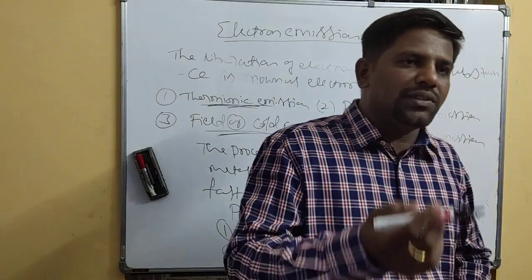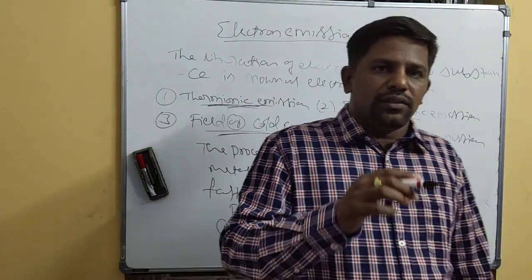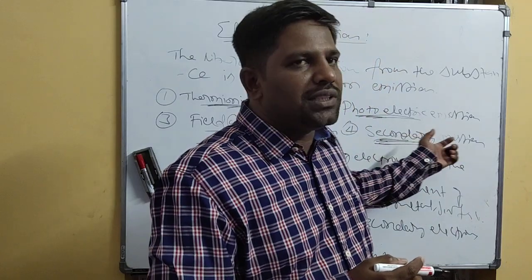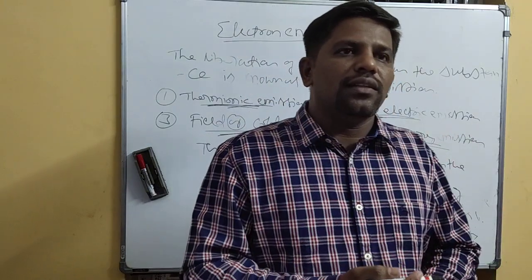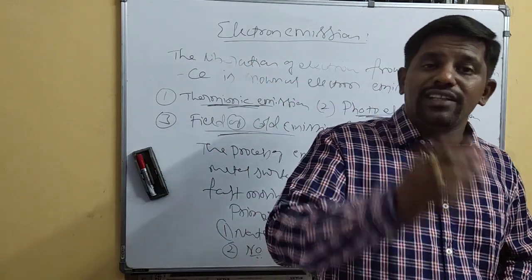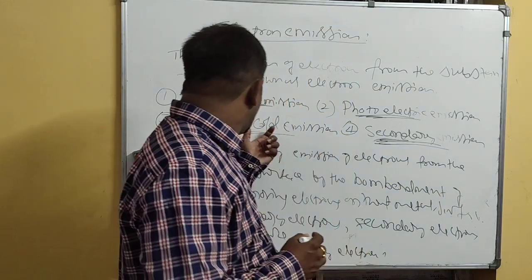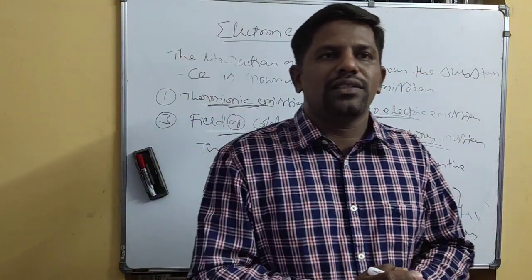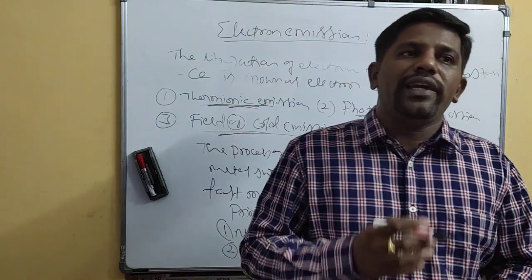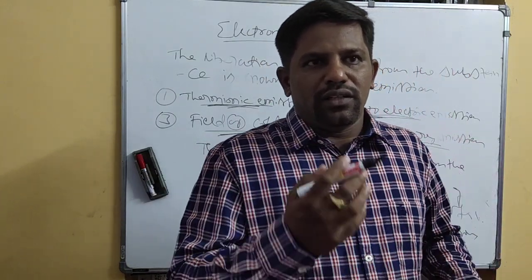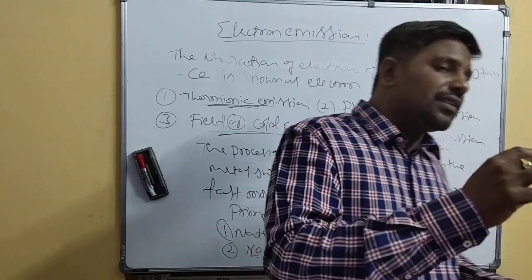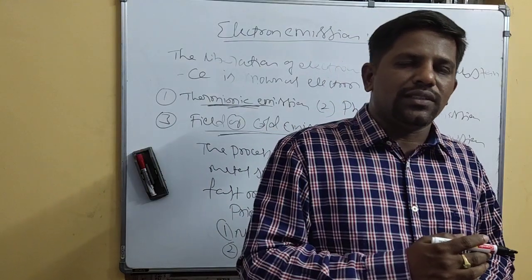In Photoelectric Emission, electrons are emitted from a metal surface by incidence of light of suitable frequency; those electrons are called Photoelectrons, and their number depends on the nature of the substance and the intensity of the incident light. In Field or Cold Emission, electrons are obtained by applying a strong electric field of around 10 to the power 8 volt per meter across the metal surface.